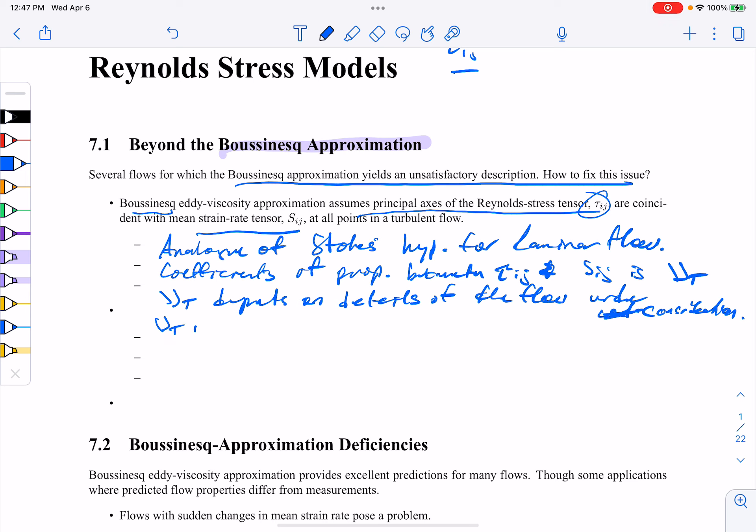We also note that eddie viscosity is not altered by, but probably should be, the shape or nature of solid boundaries, the free stream turbulence intensity, or most significantly, the history effects of the flow.